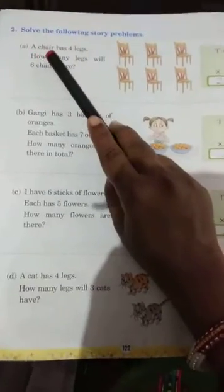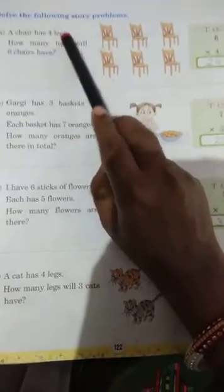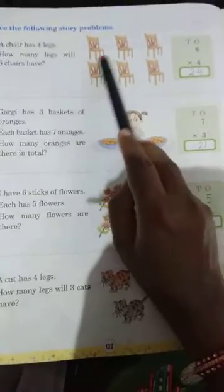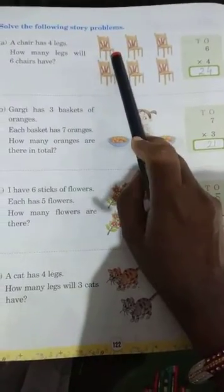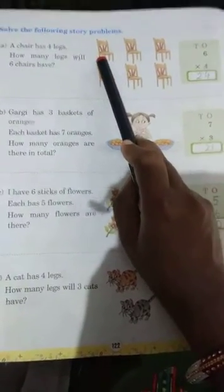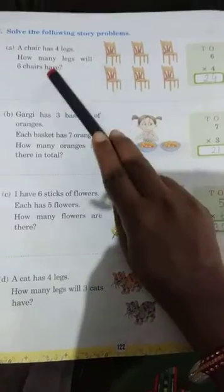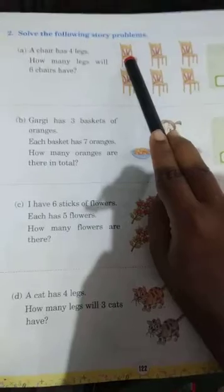Number A. A chair has 4 legs. Therefore, 1 chair has 1, 2, 3, 4. How many legs will 6 chairs have? So, 1 chair has 4 legs.